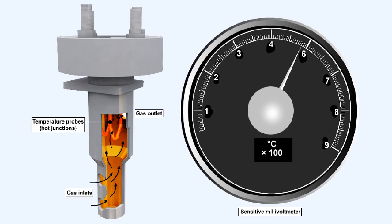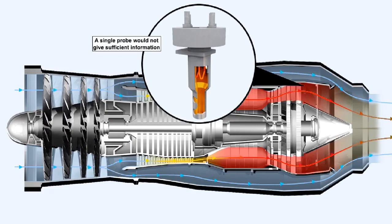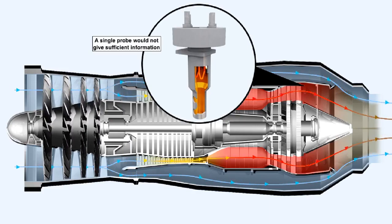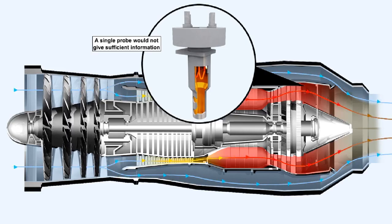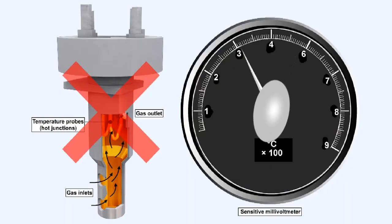A single probe would not supply enough information to accurately tell the pilot what was going on in the whole of the turbine. It could only inform him about a small part of the turbine that it was monitoring. Additionally, a failure of that single probe would rob the pilot of his knowledge of the most important of the engine parameters.